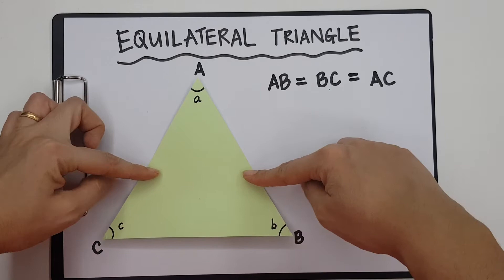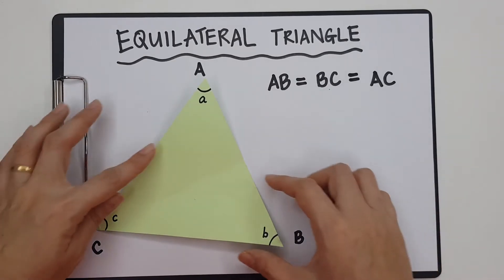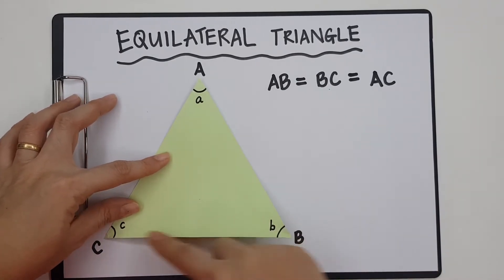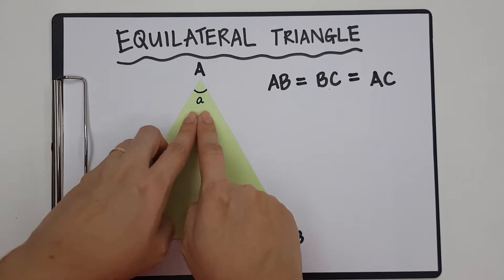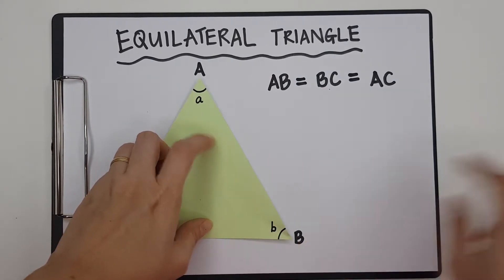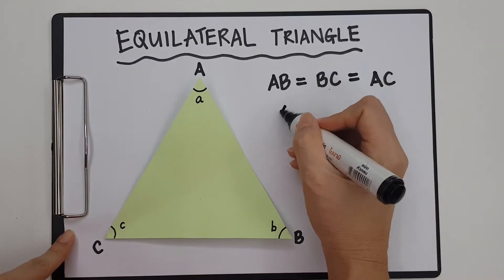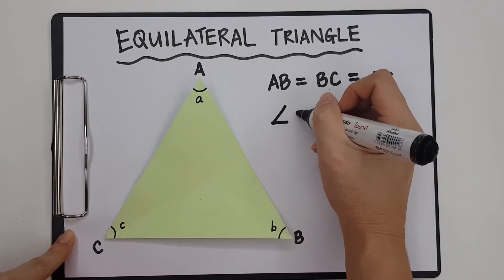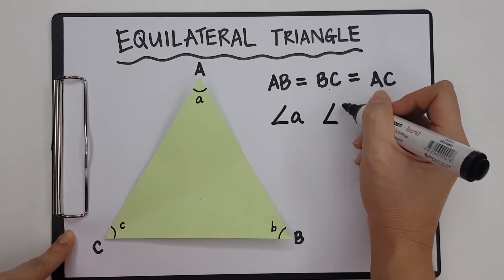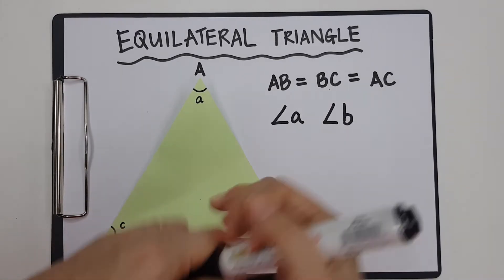Now let's look at the angles. There are three angles in this equilateral triangle. Angle A, angle B, angle C. Let me compare angle A and angle B. So I'm going to write, now this is angle A, and I'm going to compare it with angle B.